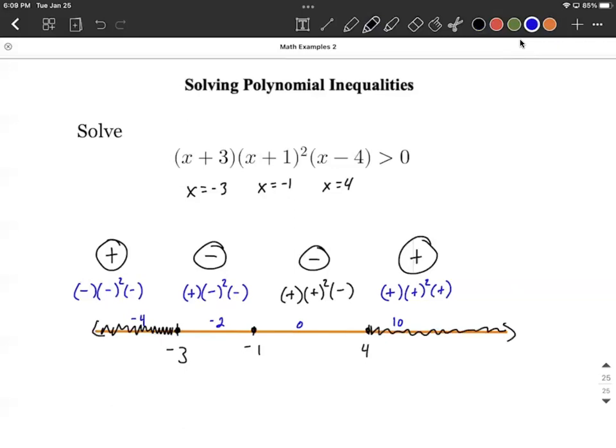And then thinking about what kind of solution set or interval notation is going to go along with this, we'd say this one on the left-hand side goes from negative infinity all the way to negative three. Now negative infinity is never going to be included, and negative three is also not going to be included in this situation because this was a strict inequality of strictly greater than zero. It's not going to equal zero.